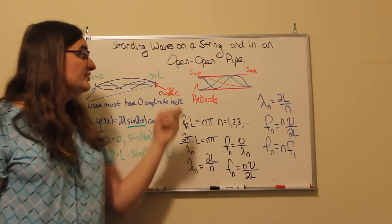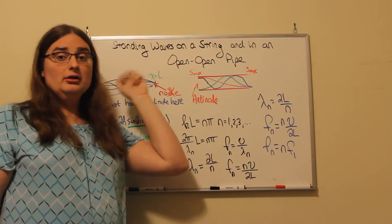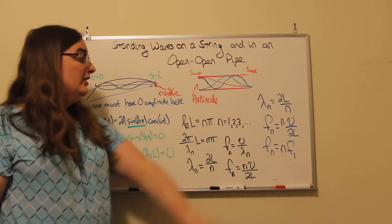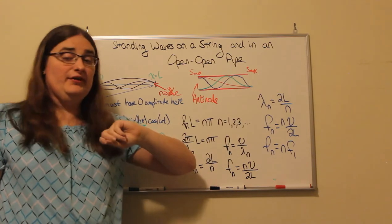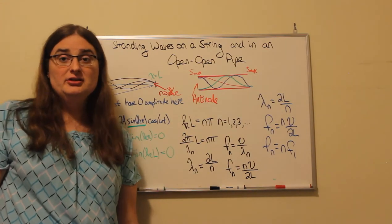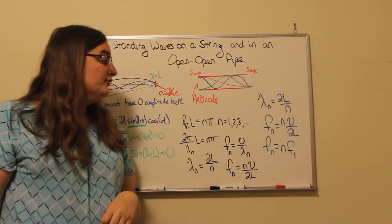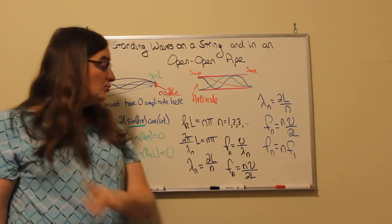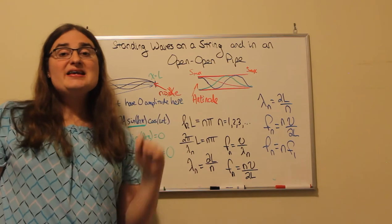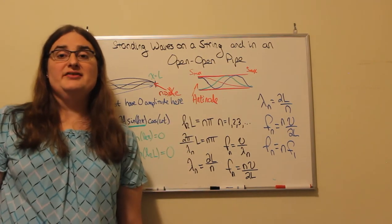So regardless of whether we're looking at a string or an open-open pipe, the wave patterns that we see have wavelengths equal to two times the length of our object divided by an integer. And our frequencies are that integer one, two, three, four, five, six, whatever, times the speed divided by two times the length of our object.